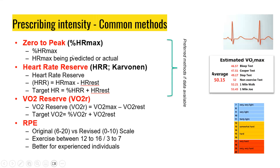The zero-to-peak method, otherwise known as the percentage of heart rate max, uses that percentage of heart rate max — either the predicted or actual value. For heart rate reserve, also called the Karvonen method, you use this formula: heart rate reserve equals heart rate max minus heart rate at rest. To calculate the target heart rate, you take the desired percentage times the heart rate reserve, then add the heart rate at rest, giving you the target heart rate at that percent intensity.